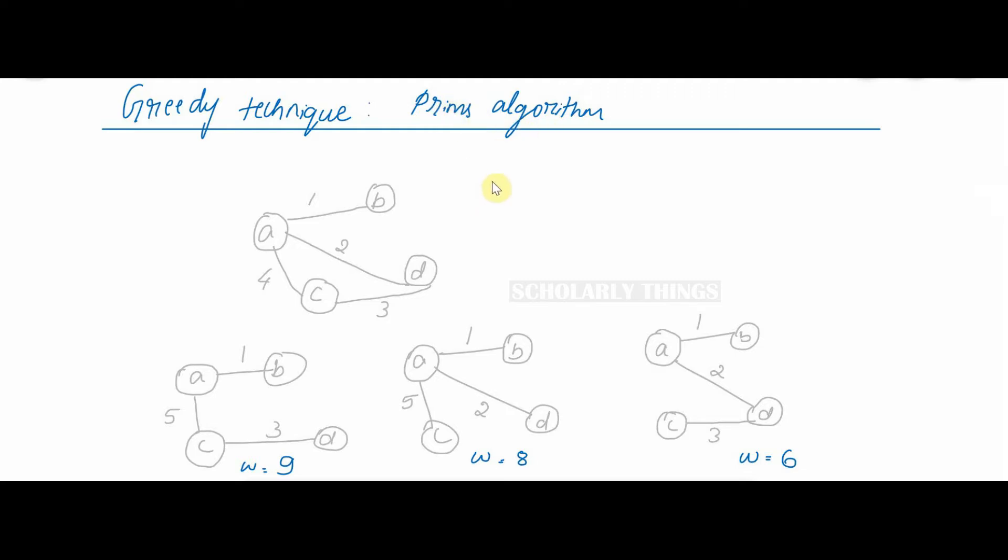Prim's algorithm is one of the algorithms under greedy technique to find out the minimum spanning tree. First of all, what is a spanning tree? A spanning tree is a connected acyclic subgraph or tree of the given graph G that includes all of G's vertices.